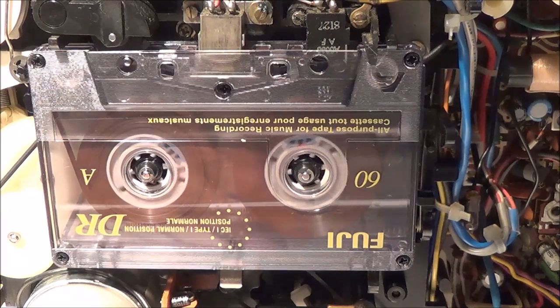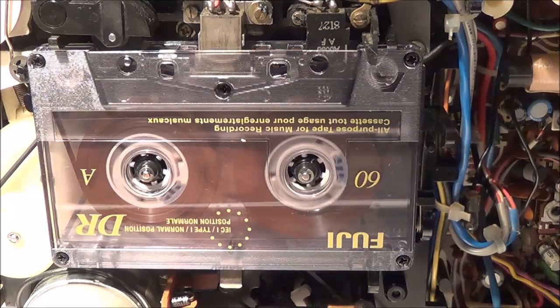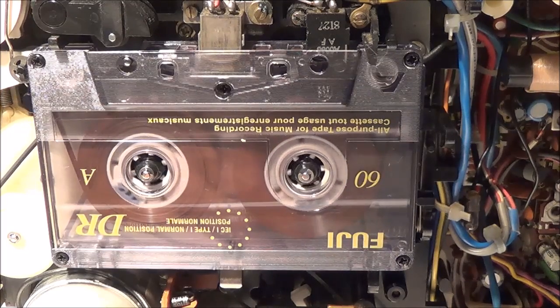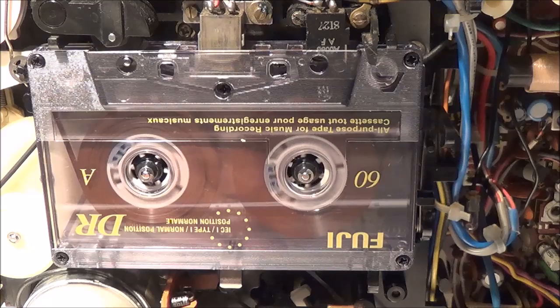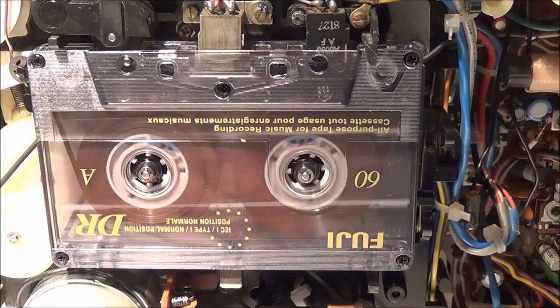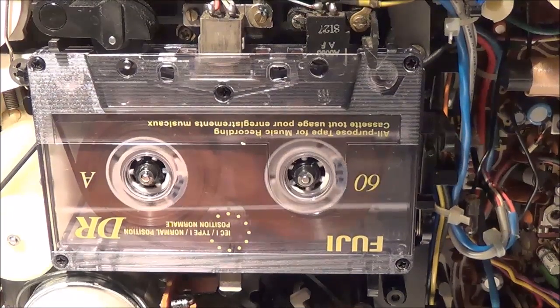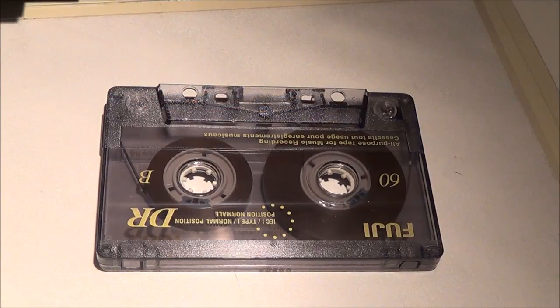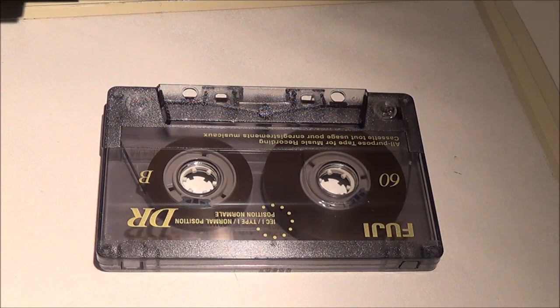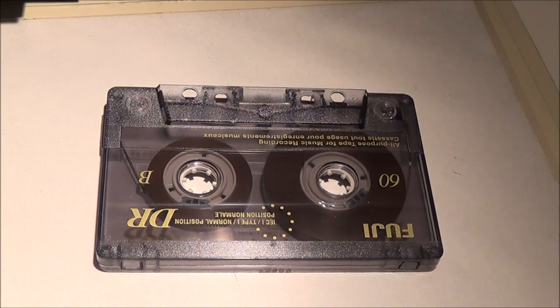You can either use a ready-made test cassette—a lot of them have like a 6.3 kHz signal on it—or you can make your own. I didn't have a standard 6.3 kHz test cassette, so I just made one. I adjusted my audio generator for 6.3 kHz, set the tape recorder to minus 10 dB, and then I started recording.